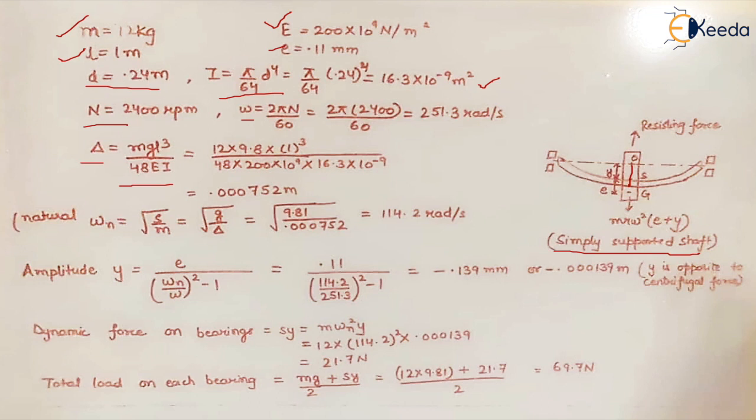We know all the values: m, g, l, E, and I. We place the values and this is the maximum deflection that can take place in this system at the center of the shaft.